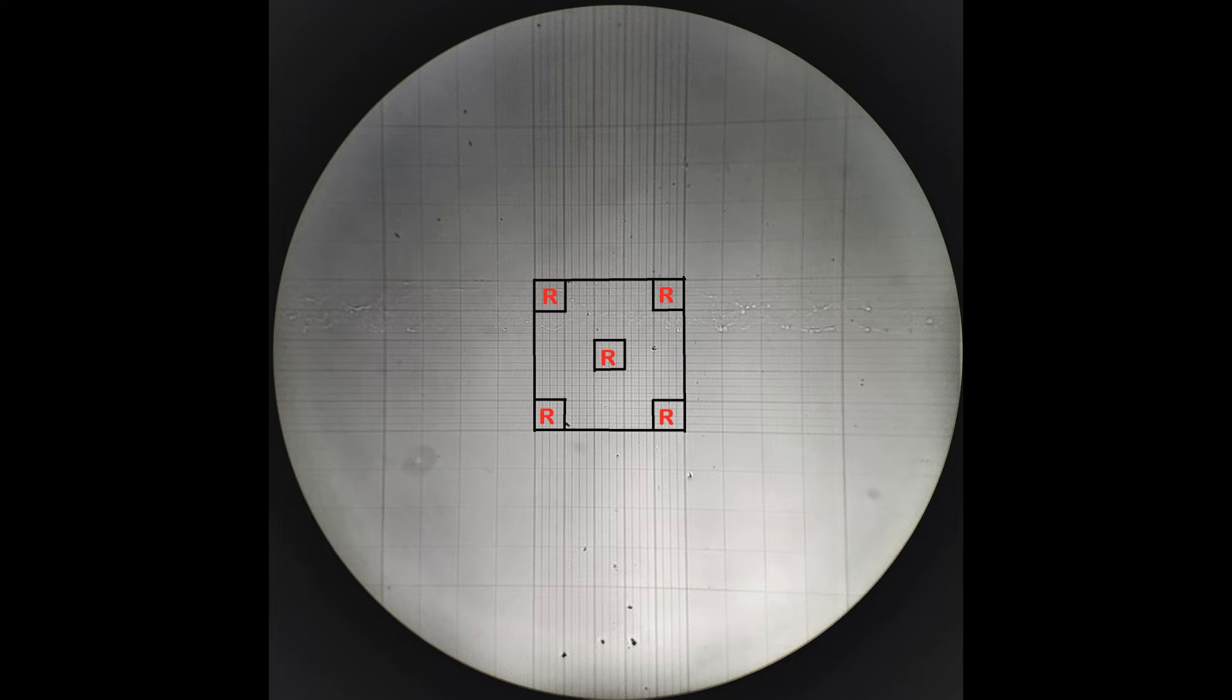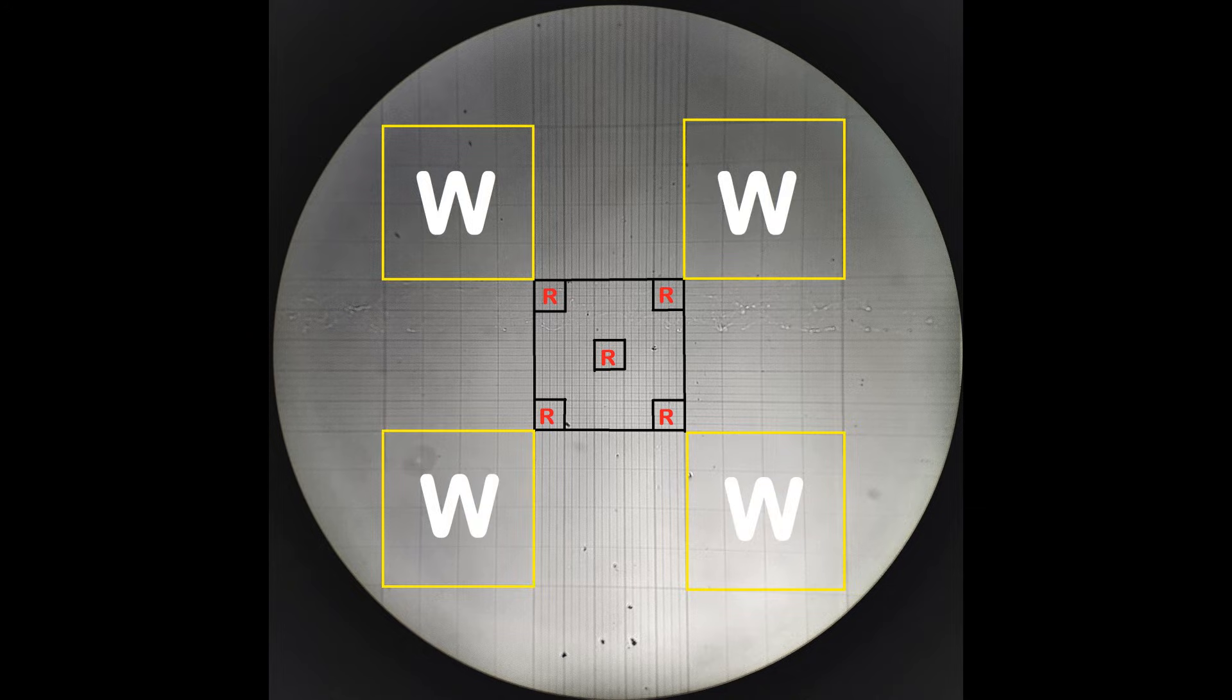The areas in the central small square marked R are used for counting red blood cells, while the four small corner squares marked W are used to count the white blood cells.